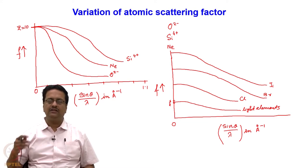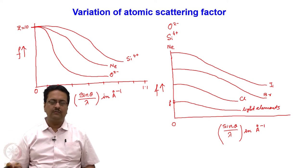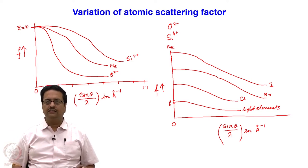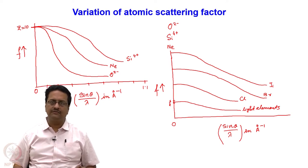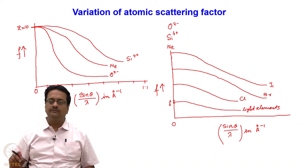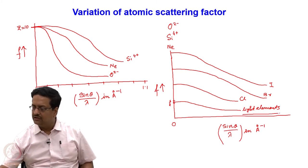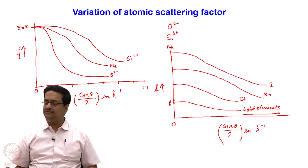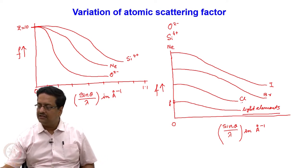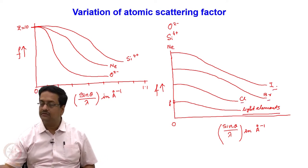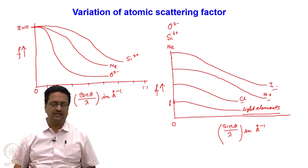With sinθ/λ, the scattering power of every element reduces very significantly. As a result, at a higher angle, we do not get very strong diffraction from most crystals. We also indicated that for light elements the scattering power is very less, and the heavier the element, the stronger the diffraction capability from those elements.